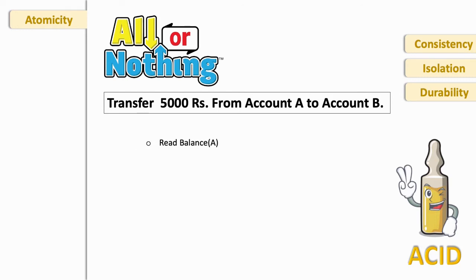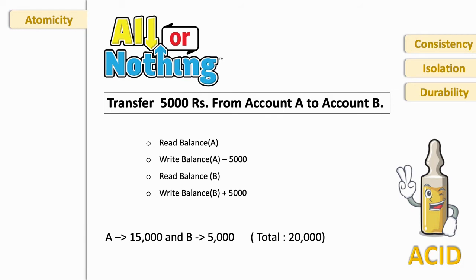Those are: first, read balance from A's account. Whatever balance is, we will deduct five thousand from A's account. Then we will read balance from B's account and add amount five thousand rupees in that balance and update the database.